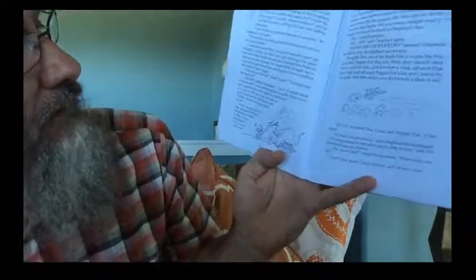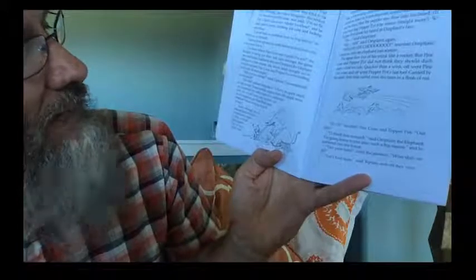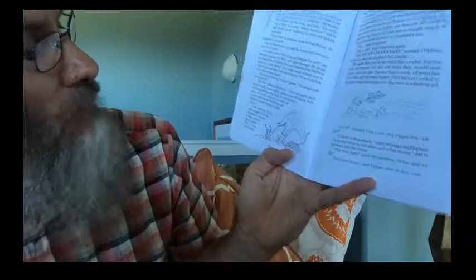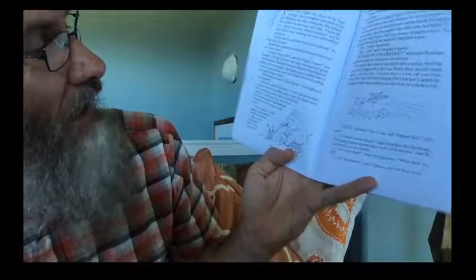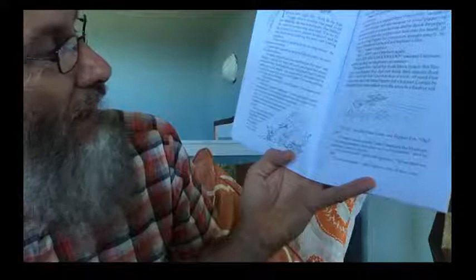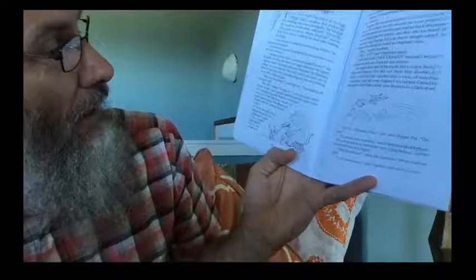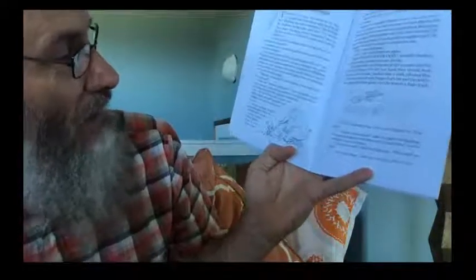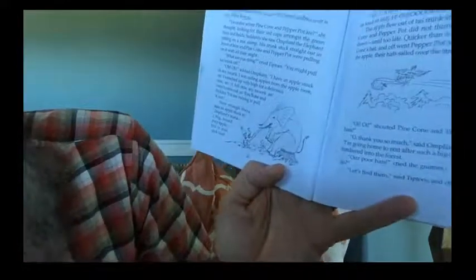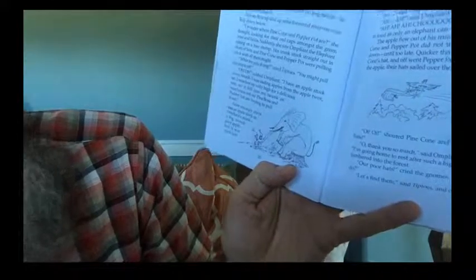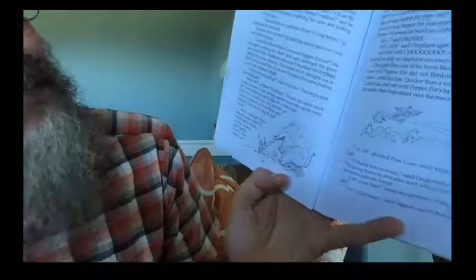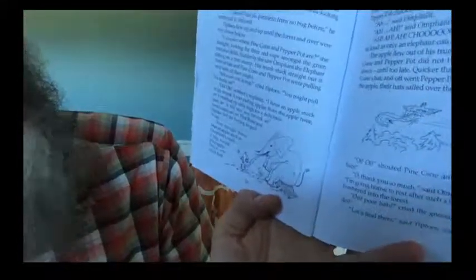His trunk stuck straight out in front of him and pine cone and pepper pot were pulling on it with all their might. What are you doing? cried Tiptoes. You might pull his trunk off. Oh, oh, sobbed Ompliant. I have an apple stuck in my twonk. I was eating apples from the apple twee and I weached up really high for a delicious one. And it fell into my twonk and won't come out. And pine bone and petter pot, petter tot are trying to pull it out. Sure enough, there was an apple stuck in Ompliant's trunk, a big, round, juicy apple, but it was stuck fast. What shall we do? What shall we do? cried pine cone and pepper pot together.